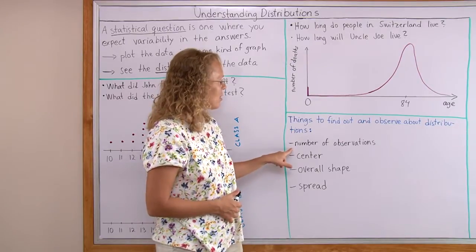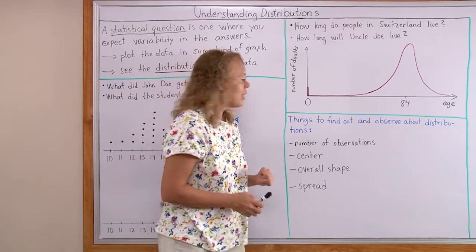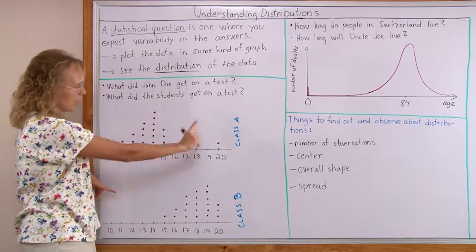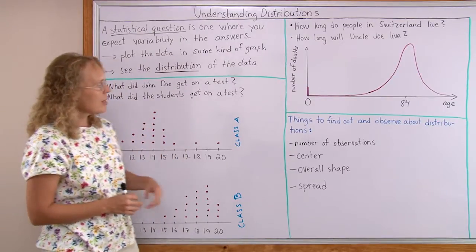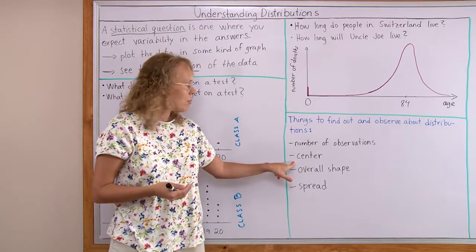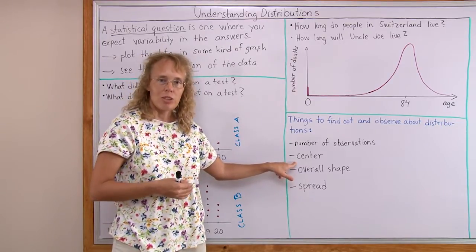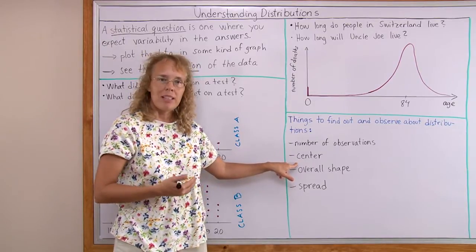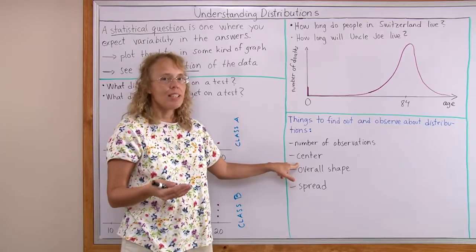And I listed here the important things to find out and observe about distributions and about your data that you have. One is the number of observations. That means for example here how many students there are, how many dots there are here. Then the center, I already talked about that. In our next lesson we're going to study measures for the center of a distribution. The main ones being the mean, the median and the mode.